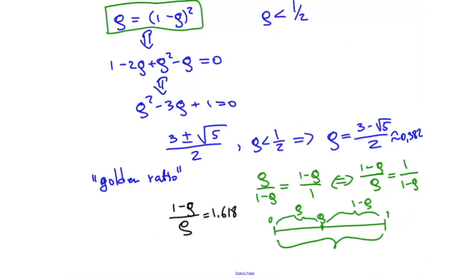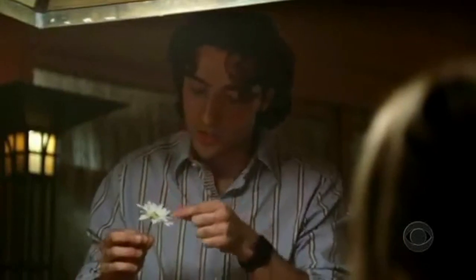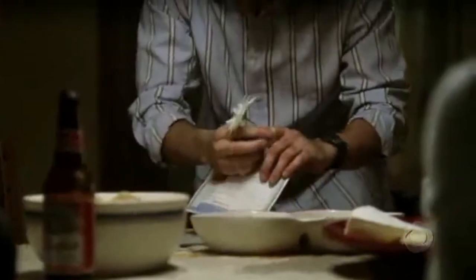The golden ratio is famous and arises in many different places, often associated with natural beauty. The proportions in the Parthenon and other famous architectural landmarks have been observed to involve the golden ratio. You can find it in the pyramids at Giza, in the dimensions of a credit card, and even in the arrangement of numbers in a flower sequence where the ratio of consecutive terms approaches approximately 1.61803.